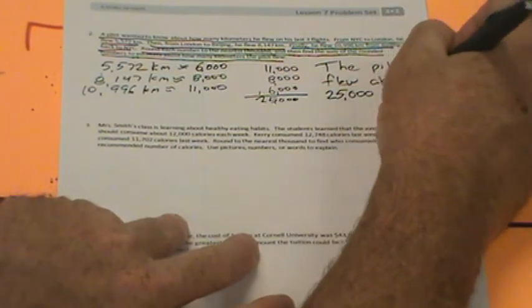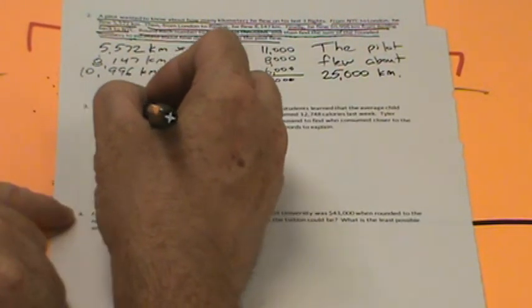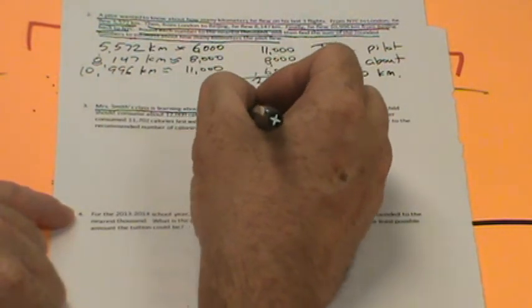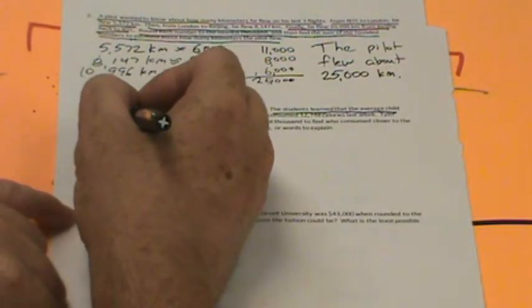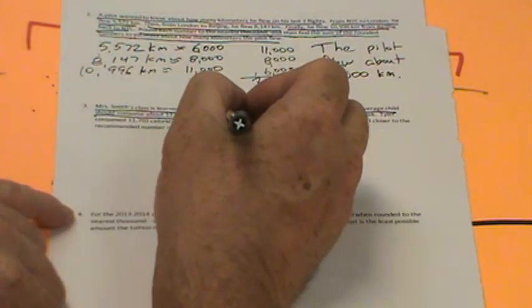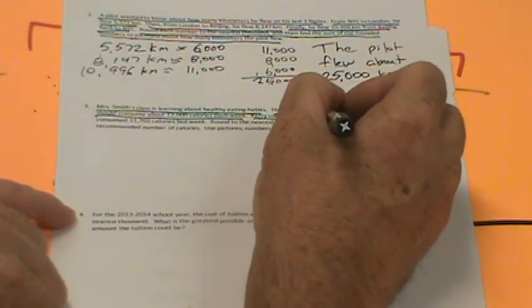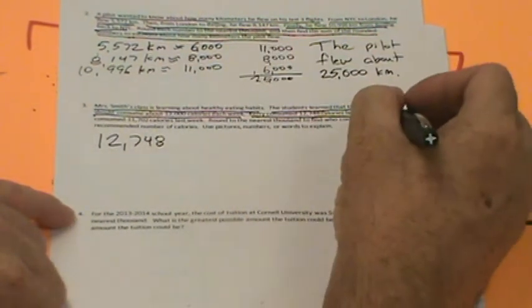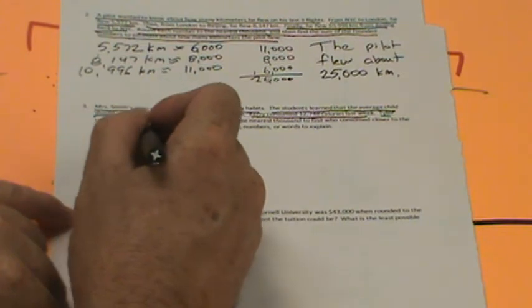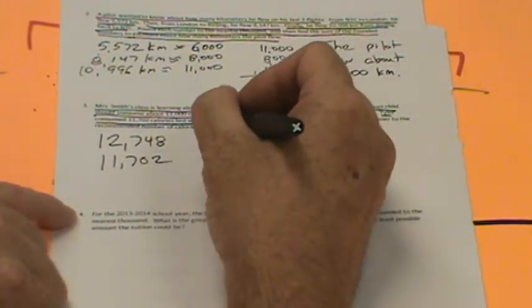We've got time for one more. Mrs. Smith's class is learning about healthy eating habits. The students learned that the average child should consume about 12,000 calories each week. Kerry consumed 12,748 calories last week. Tyler consumed 11,702 calories last week.